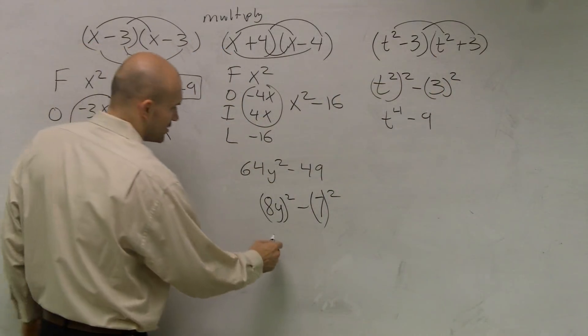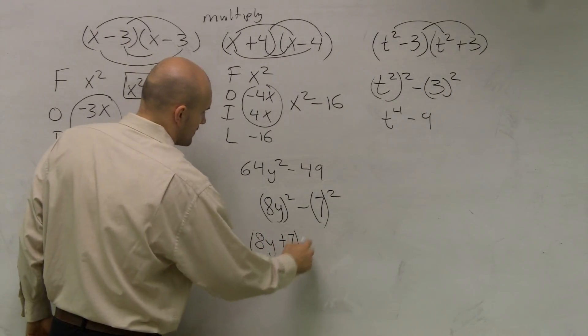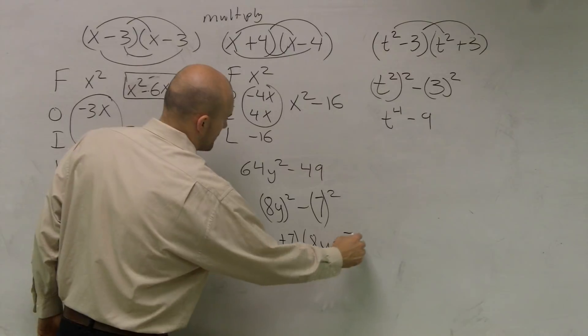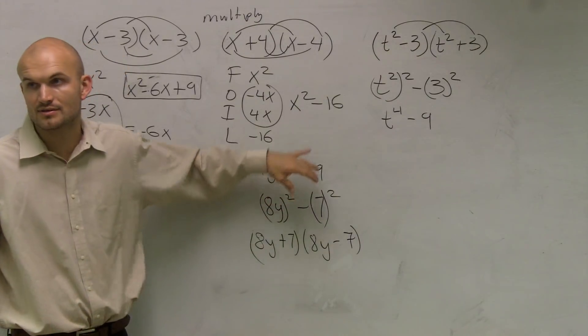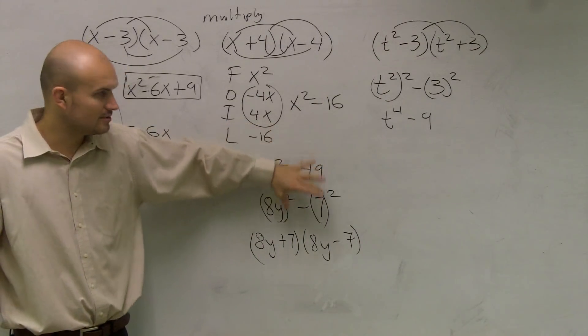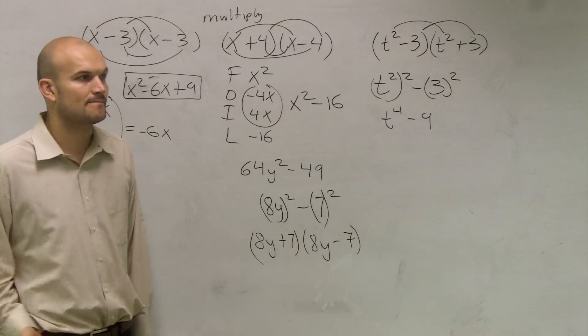All I do is I take my terms and I do t minus 3 and t plus 3. So, that's all I'm going to do here. I'm going to do 8y plus 7 times 8y minus 7. And there you go. Now, I have completely factored out a binomial into a product of two binomials.